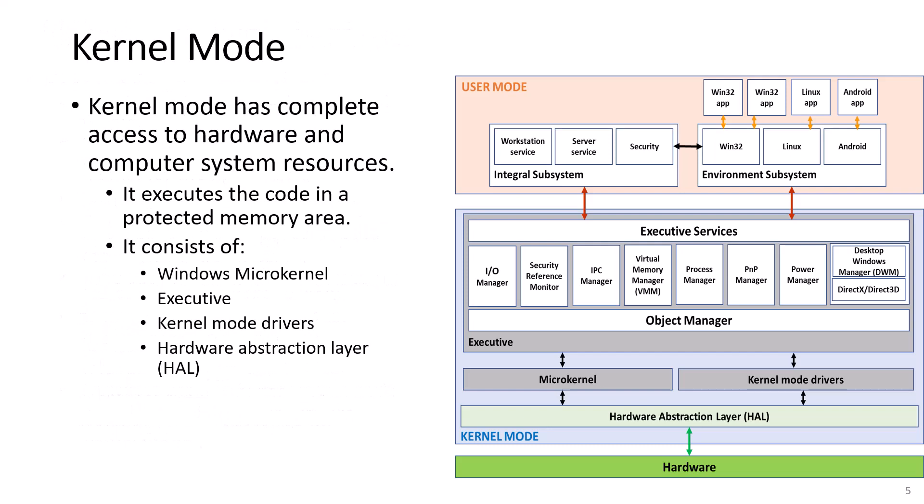Kernel mode has complete access to hardware and computer system resources. It executes the code in a protected memory area. It consists of the Windows microkernel, the executive services, kernel mode drivers, and the hardware abstraction layer, or HAL.